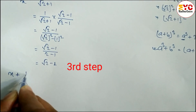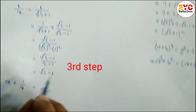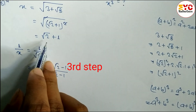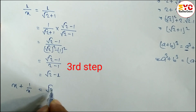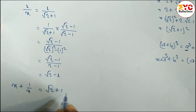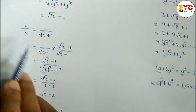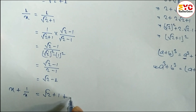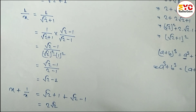In the third step, we find x + 1/x. The value of x is √2 + 1, and the value of 1/x is √2 − 1. So x + 1/x = (√2 + 1) + (√2 − 1) = 2√2.